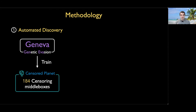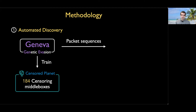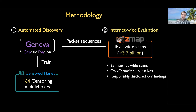To tackle this, we made use of a tool called Geneva — a learning genetic algorithm we originally designed to evade censorship. It's effectively a network fuzzer, and we changed its fitness function to reward it for finding ways to elicit large amplification factors from middleboxes. We trained Geneva 184 times on censoring middleboxes around the world identified by Censored Planet, and this gave us output as a series of packet sequences that can elicit responses from middleboxes. We then scanned the entire IPv4 internet a total of 35 times to identify how much amplification factor we could get. We also responsibly disclosed our findings, reaching out to many country-level CERTs, DDoS protection services, and middlebox manufacturers.